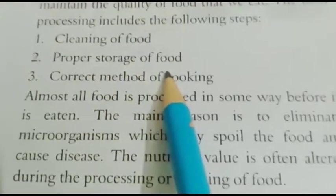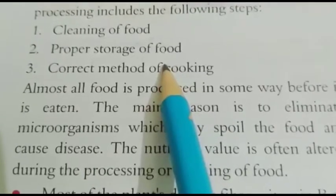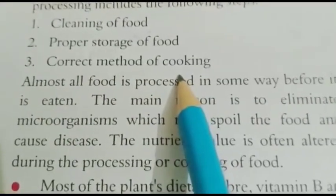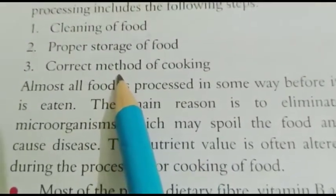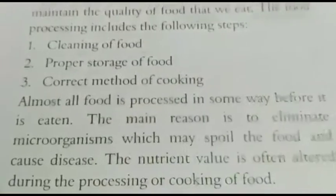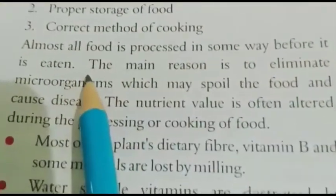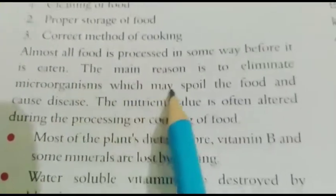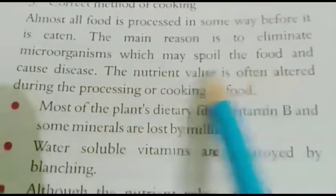Proper storage of food is essential so that insects and bacteria cannot contaminate it. The correct method of cooking must also be followed. These three steps — cleaning, storage, and correct cooking — are needed for good health. Almost all food is processed in some way before it is eaten. The main reason is to eliminate microorganisms which may spoil the food and cause disease.